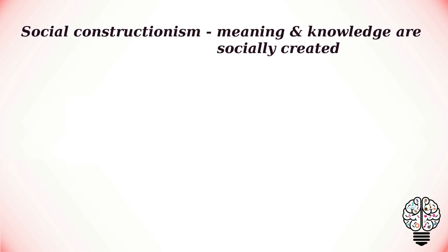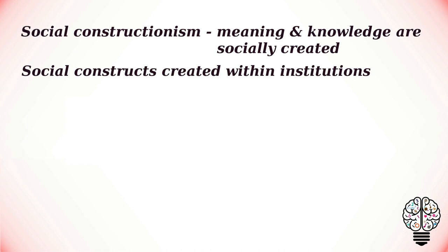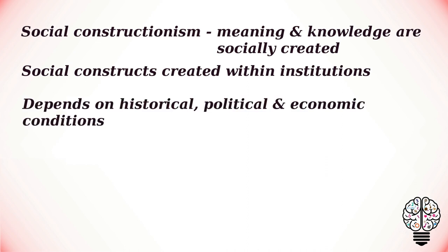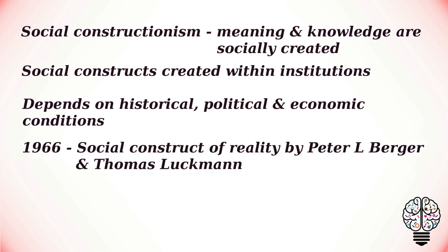The theory of social constructionism states that meaning and knowledge are socially created. Social constructionists believe that things generally viewed as natural or normal in society — such as understandings of gender, race, class, and disability — are socially constructed and consequently aren't an accurate reflection of reality. Social constructs are often created within specific institutions and cultures and come to prominence in certain historical periods.